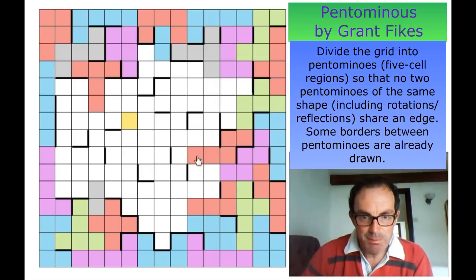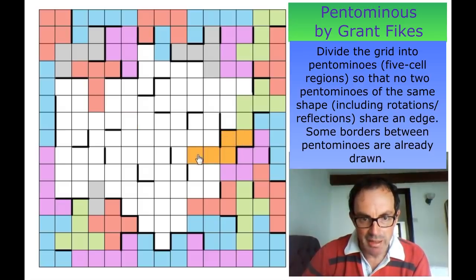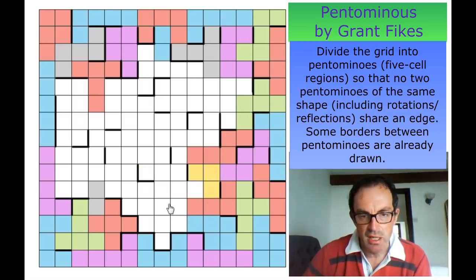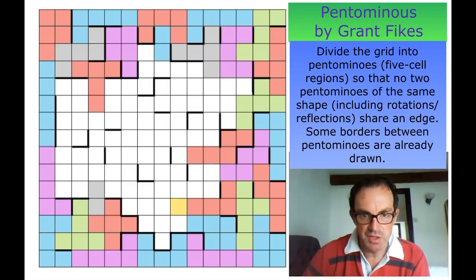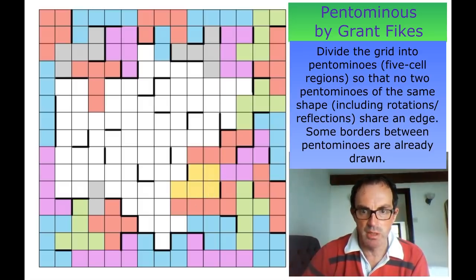This N pentomino has told us about this red region. If we try and make this a U pentomino it isolates a triomino, which won't work. So this must be an L. This region now has only one exit, so this is a P pentomino.